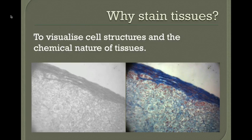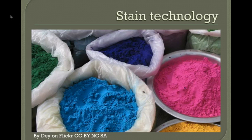We need to stain tissues in order to visualize cell structures and detect some of the chemical nature of the tissue. When we stain with Martius Scarlet Blue, we can start to visualize cell components — in adrenal gland tissue, the nuclei stain pink and the collagen forming the outer capsule stains blue.